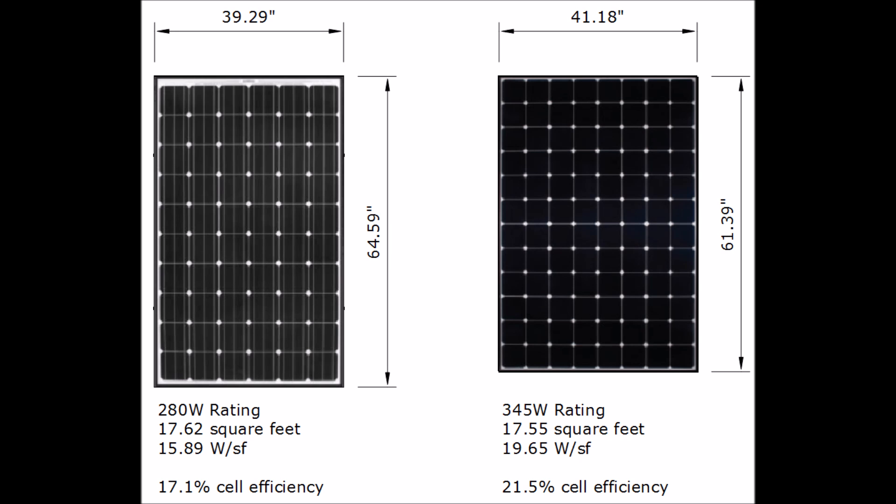Another big difference is that mono panels are more efficient, which doesn't mean that they perform better — what it means is that they can produce more power for the same space. As you can see in this example, for the same square footage you're going to get more power — 65 watts more power out of the panel on the right than you would on the panel on the left. That comes into play when you have limited space on your roof; you're going to possibly want to go with the more efficient panel.